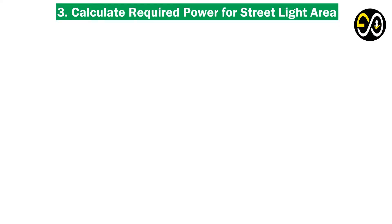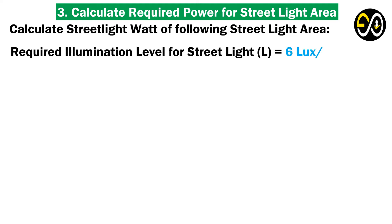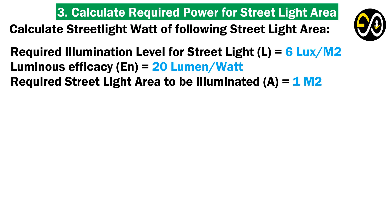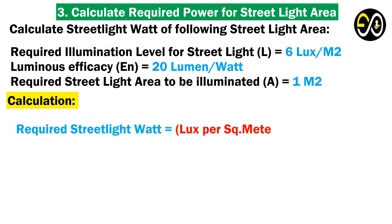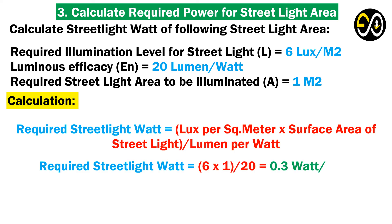Example 3: Calculate the required power for a street light area. Required illumination level for street light L equals 6 lux per square meter. Luminous efficacy equals 20 lumens per watt. Required street light area to be illuminated A equals 1 square meter. Calculation: Required street light watt equals lux per square meter times surface area, over lumens per watt, which equals 6 times 1, over 20, equals 0.3 watts per square meter.